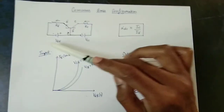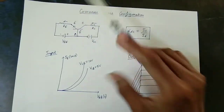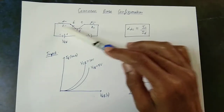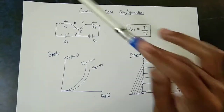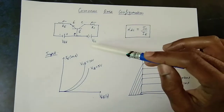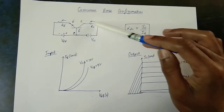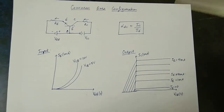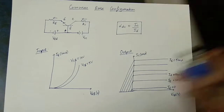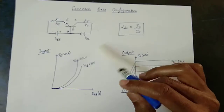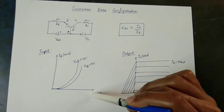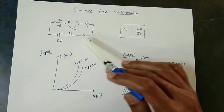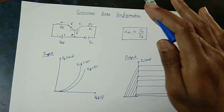On the input side, a supply voltage VEE is applied. The input characteristics plot VEB vs IE with VCB held constant. On the output side, VCE is connected, and the output characteristics are plotted while varying the input.